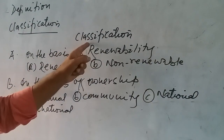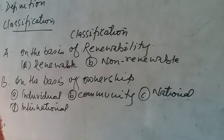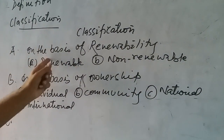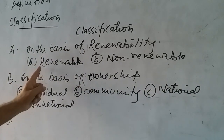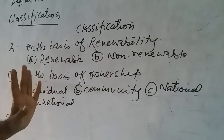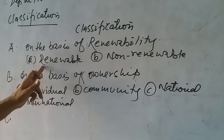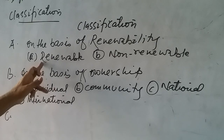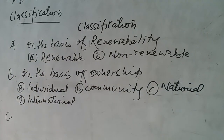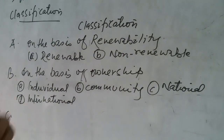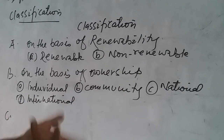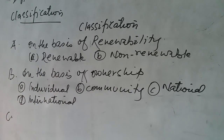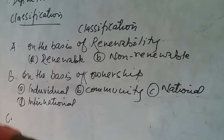Now the classification: we have to see the different types of resources. The first classification is that resources can be classified into two types — renewable and non-renewable. Renewable are those which can be renewed again and again after use, like water, air, and plants. These can be renewed, developed, and remade after our use.